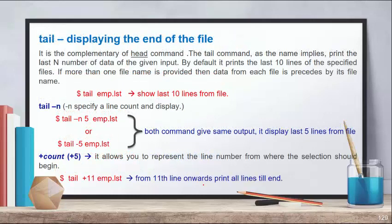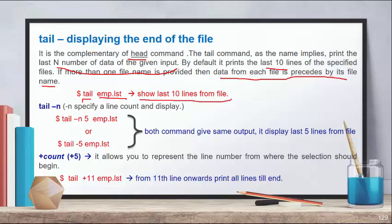Next is the TAIL command. Just as head displays lines from the top, tail displays lines from the bottom — it is the complementary part of the head command. Tail prints the last N number of lines of the given input; by default it prints 10 lines. When more than one file name is provided, the data from each file is preceded by its file name. Using tail followed by a file name without any option shows the last 10 lines. You can also use minus N to specify the line number.